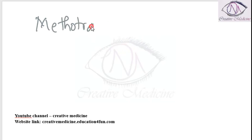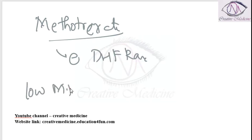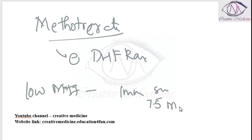Methotrexate will inhibit the dihydrofolate reductase enzyme. A low dose of Methotrexate has an immunosuppressive effect — for example, at a dose of 7.5 mg per week.